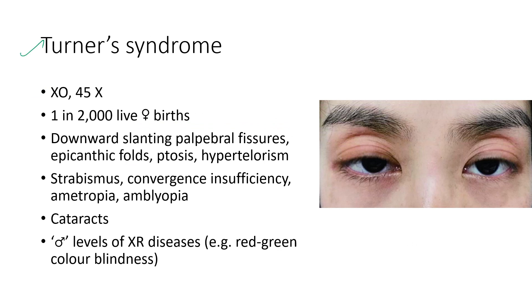Next is Turner syndrome, occurring in 1 in 2000 live female births. It is depicted by 45,X — 45 chromosomes with one absent X chromosome. The patient can present with downward slanting palpebral fissures, epicanthic folds, ptosis, and hypertelorism. Other features include strabismus, convergence insufficiency, ametropia, amblyopia, cataracts, and red-green color blindness.